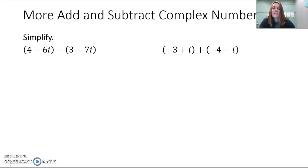So we're going to take the quantity 4 minus 6i minus the quantity 3 minus 7i. And anytime we're subtracting, whether it's complex numbers or polynomials, you want to make sure that you distribute that subtraction to the second set of parentheses.